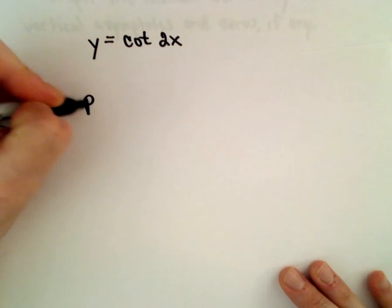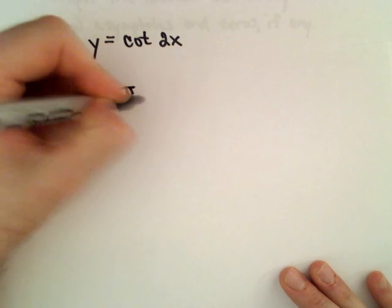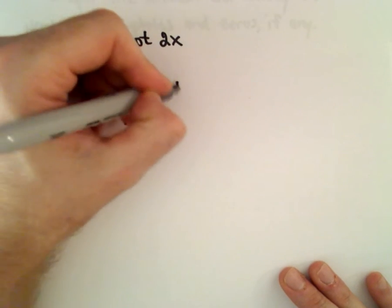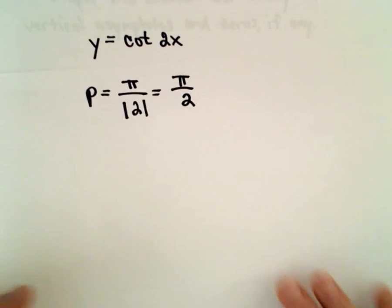In this case, the period, we'll take pi and divide it by the absolute value of b, which is 2. That'll give us pi over 2.